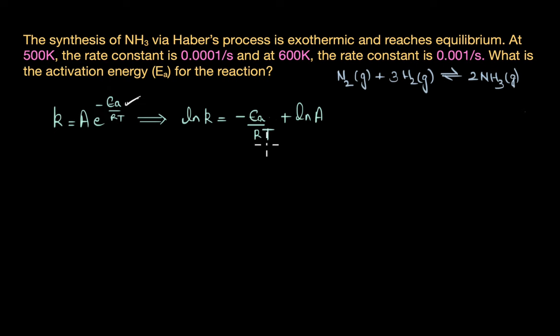When we plot ln K against 1 by T, we get a straight line with negative slope M equals minus Ea by R and y intercept of ln A.